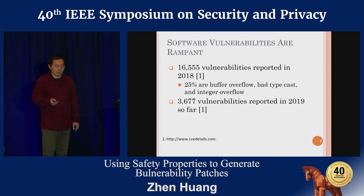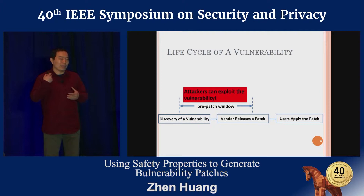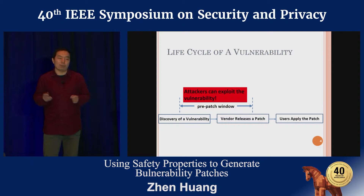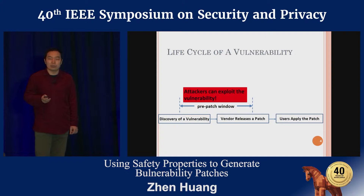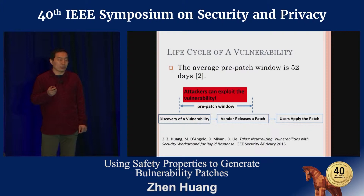When a software vulnerability is discovered, the software vendor will need to develop a patch and release it, after which users can apply the patch to fix the vulnerability. Because releasing a patch takes time, there usually exists a window of time between the discovery of a vulnerability and the release of a patch, which is called a pre-patch window. During the pre-patch window, attackers can exploit this known vulnerability because the patch is not yet available. One study published in 2016 finds that the average pre-patch window is as long as 52 days.